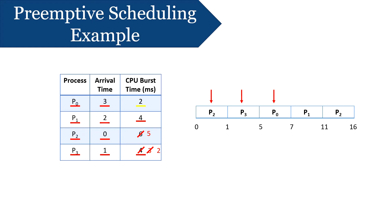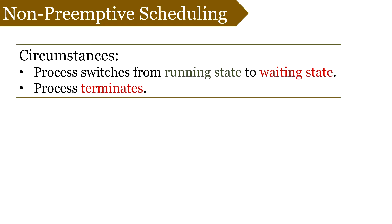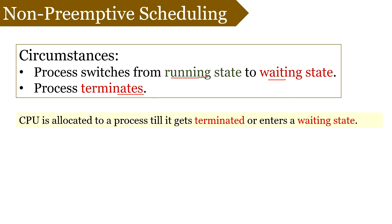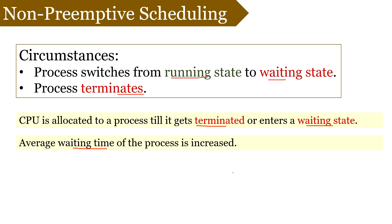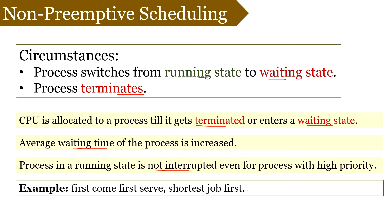Non-primitive scheduling occurs under two circumstances: when the process switches from a running state to a waiting state, or when the process terminates completely. In non-primitive scheduling, once the CPU is allocated to a process, that process releases the CPU only when it gets terminated or enters a waiting state, such as for an I/O operation. This kind of scheduling increases the waiting time of processes and makes scheduling rigid, as the currently executing process is not interrupted even if a higher-priority process arrives.